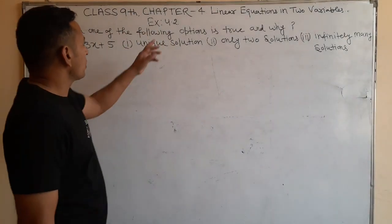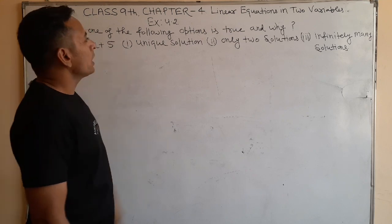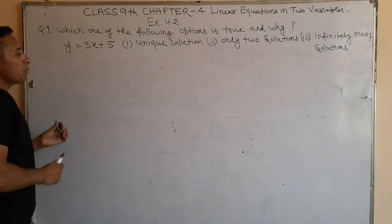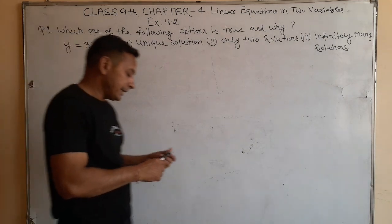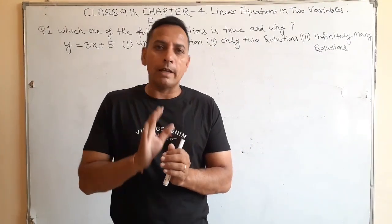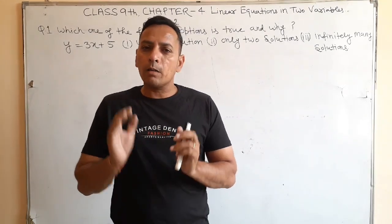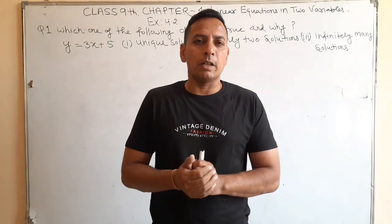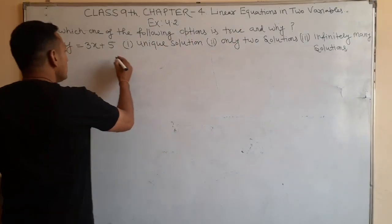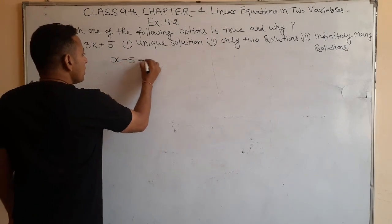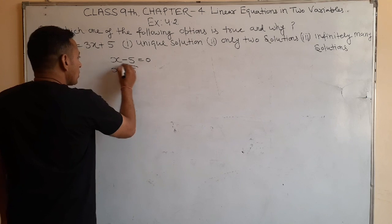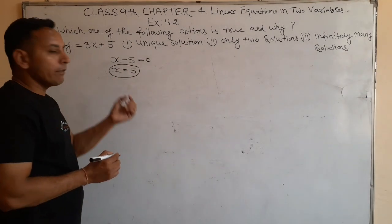Now we discuss Exercise 4.2, Question number 1: Which of the following options is true? If we have a linear equation in one variable, it has a unique solution. For example, x minus 5 is equal to 0 gives x equals 5, which is a unique solution.